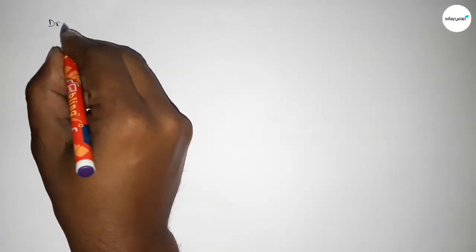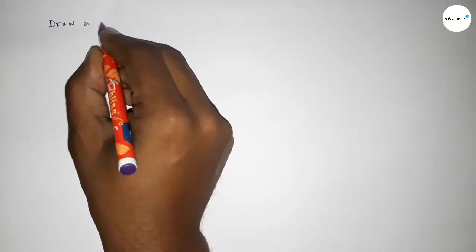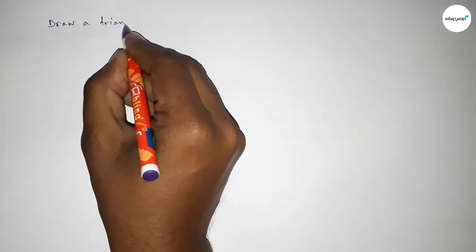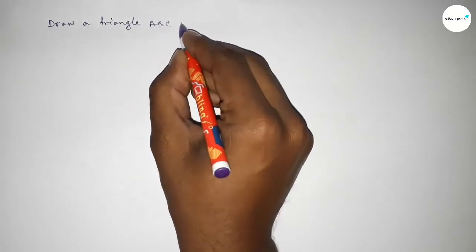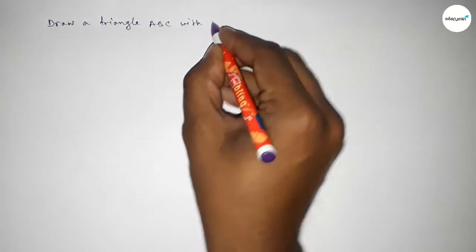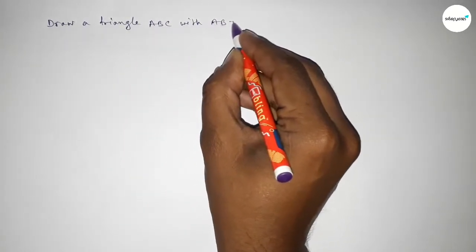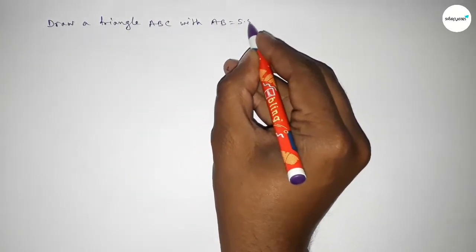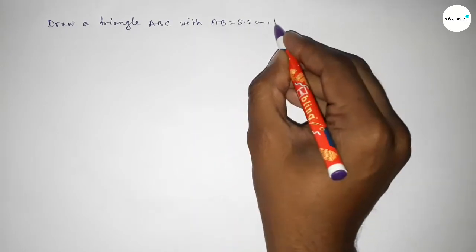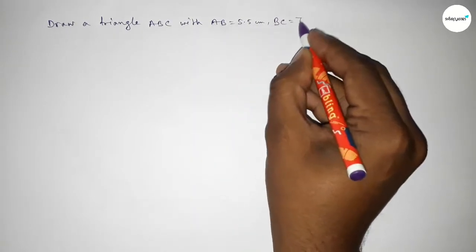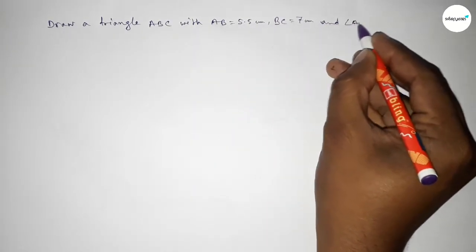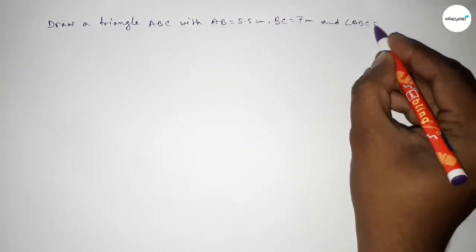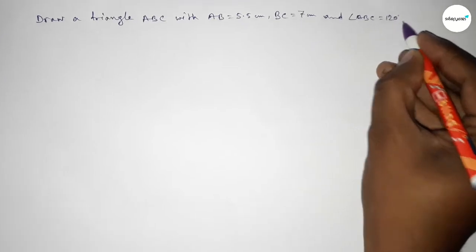Hi everyone, welcome to SH Sir Classes. Today in this video we have to draw a triangle with AB equal to 5.5 centimeter, BC equal to 7 centimeter, and angle ABC equal to 120 degrees.